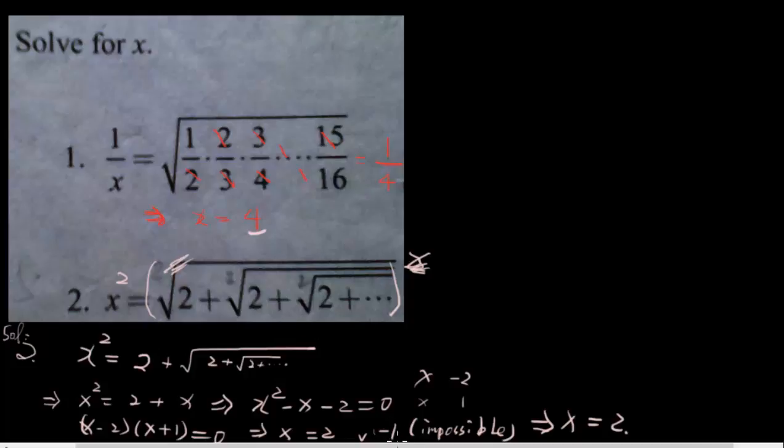So negative 1 is impossible. That means x equals 2. That's the answer. The first answer: x equals 4. The second: x equals 2. Okay, thank you.